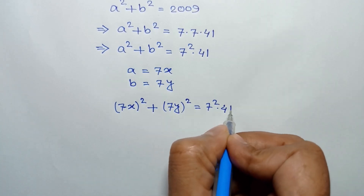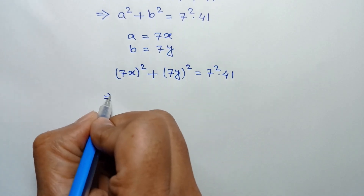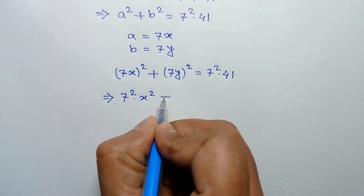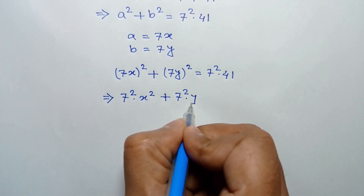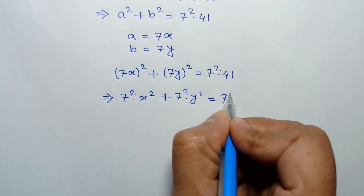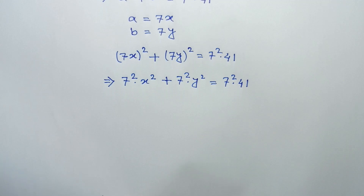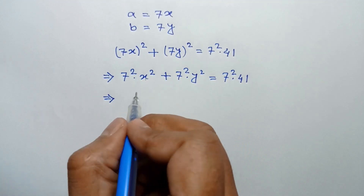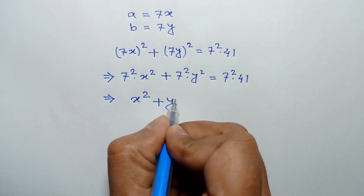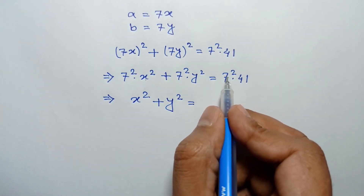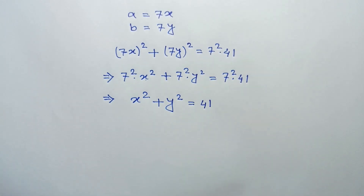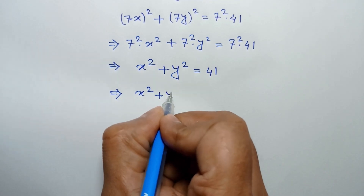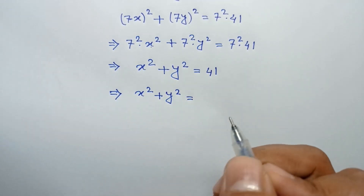This can be written as 7 squared times x squared plus 7 squared times y squared equals 7 squared times 41. Dividing both sides by 7 squared, we get x squared plus y squared is equal to 41.